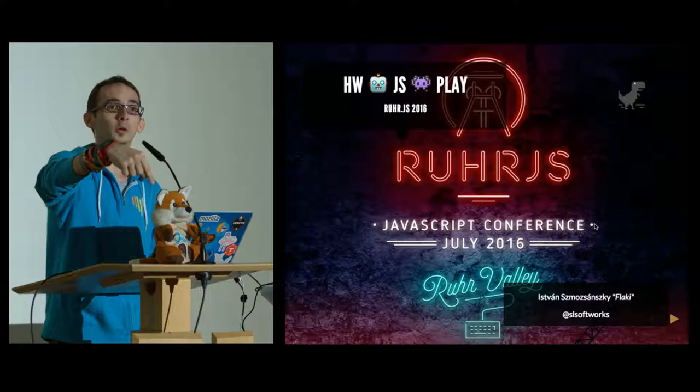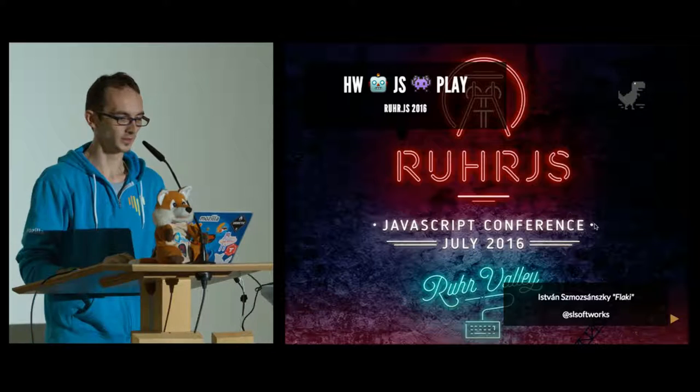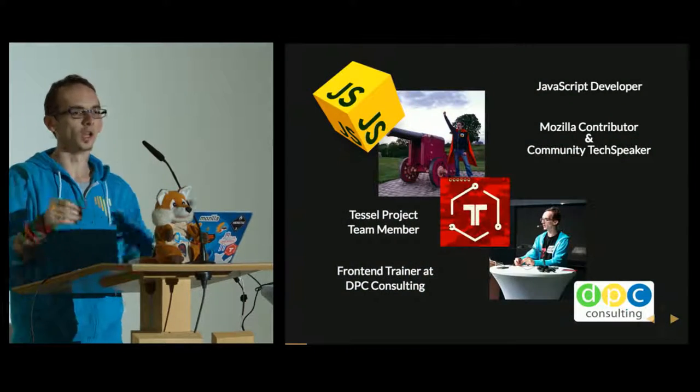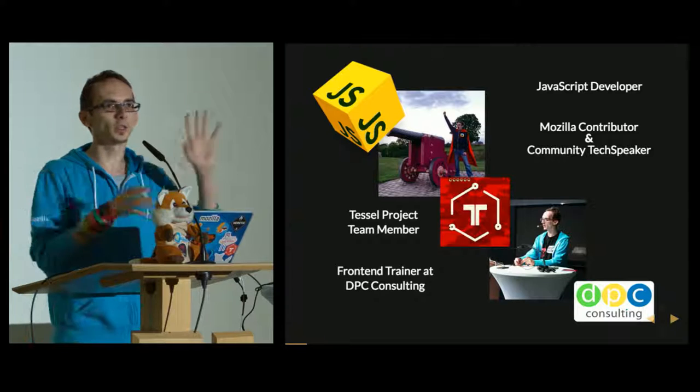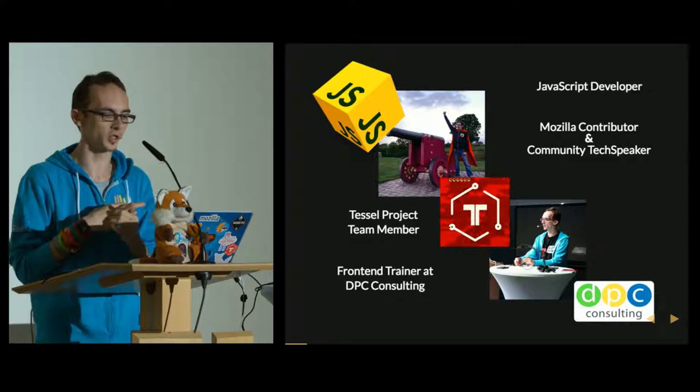Welcome to Rural.js. My name is Flaky, which is short for Ishtlan Smurzanski — you don't want to mess with that name. This is my co-presenter Bela. I'm a JavaScript developer; I do a lot of different things, a lot of open source stuff.